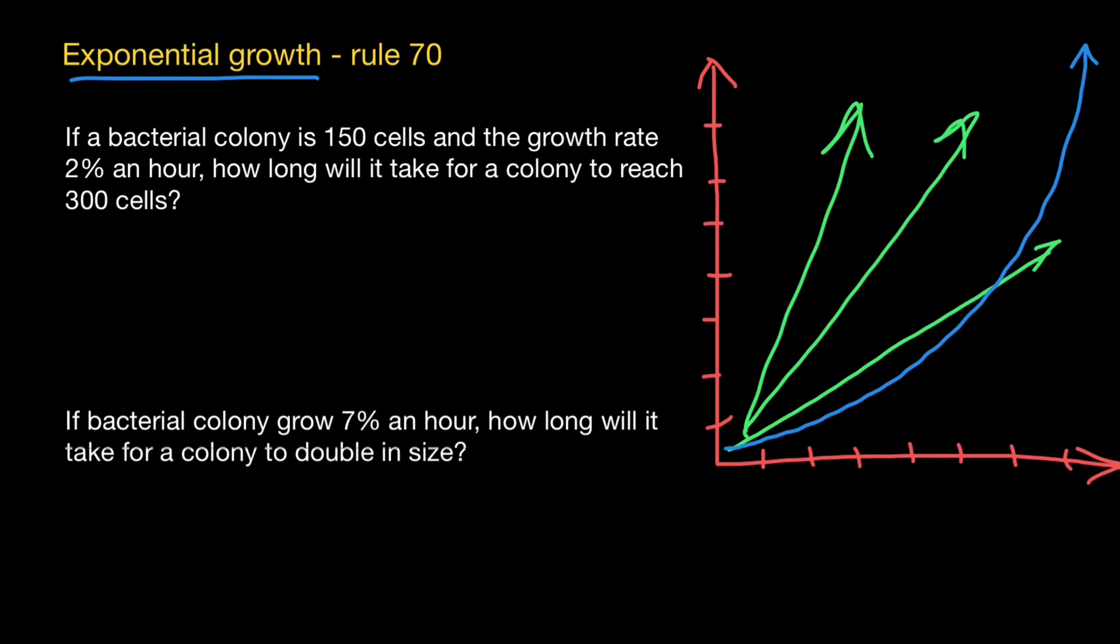Basically, this problem asks us how long it's going to take for a colony to double in size. So we start with 150 cells and end with 300 cells. How long it's going to take to reach 300 cells with a growth rate of 2% an hour?